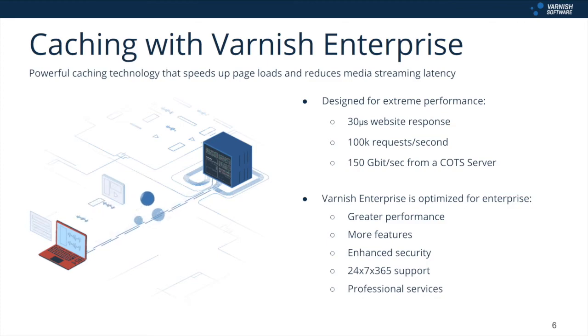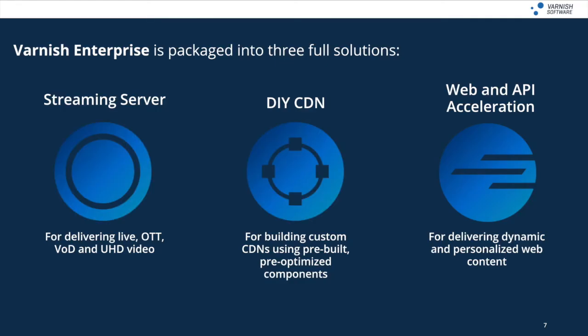Varnish Enterprise is the underlying technology packaged into three full solutions, each optimised for a specific content delivery domain. Streaming Server is for delivering live, OTT, VOD, and HD video. DIY CDN is for building custom CDNs using pre-built, pre-optimised components. Web and API Acceleration is for delivering dynamic and personalised web content. The feature sets and customisations in each of these solutions perfectly suit their particular use cases.